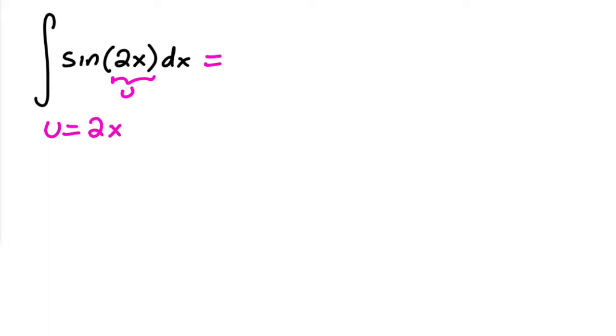Now it might not be 100% clear right now why I chose 2x, but with practice it does. Then once you have that, you find what du is, and so this is basically the derivative of u. So du is 2, the number 2, and then dx.